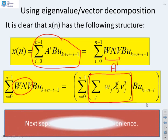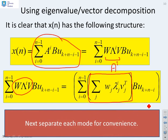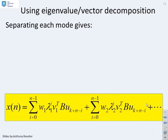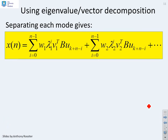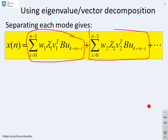Having done that, next what I want to do is separate each of these modes for convenience. I'm going to take this mode where I've got the j's and I'm going to separate them out. If I do that, you find you end up with mode 1: a sum from i equals 0 to n minus 1 of the mode 1 behaviour, and then a sum from i equals 0 to n minus 1 of the mode 2 behaviour, and so on.